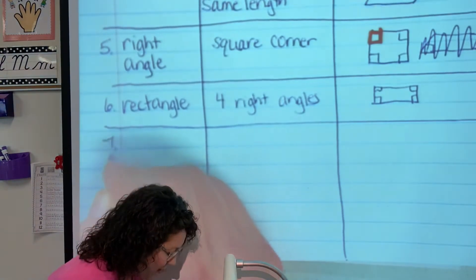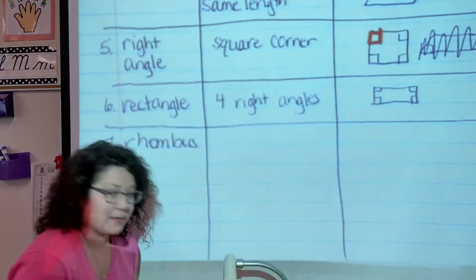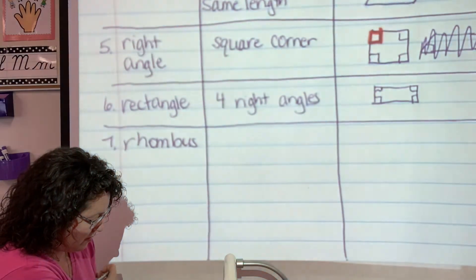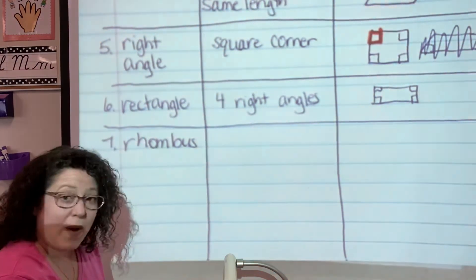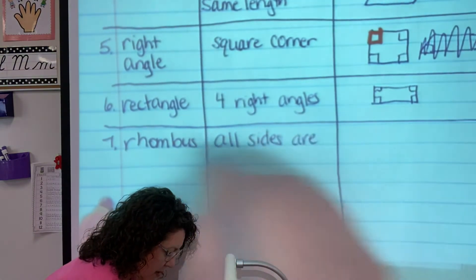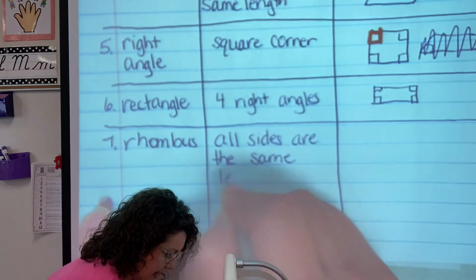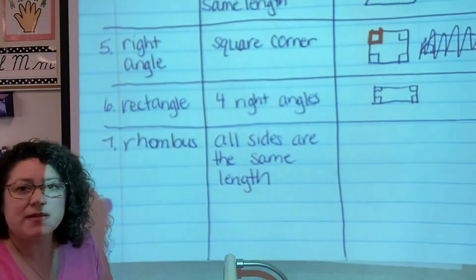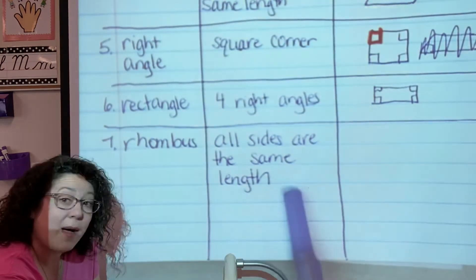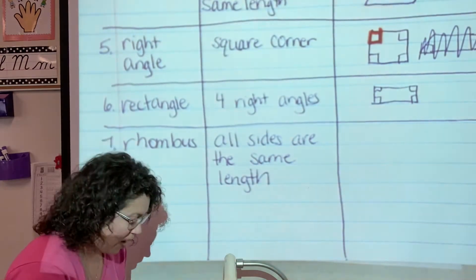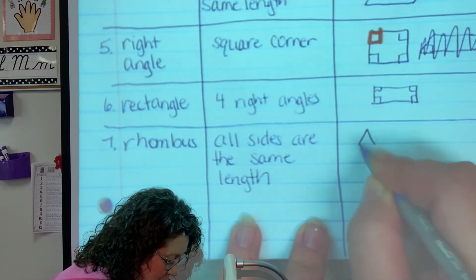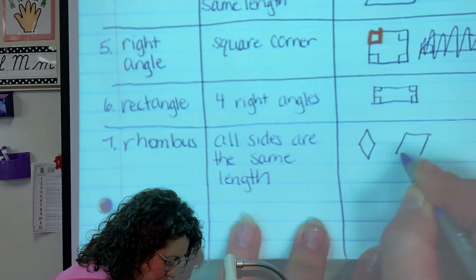Okay, number seven. Rhombus. Rhombus, R-H-O-M-B-U-S. Rhombus. And a rhombus has all sides are the same length. So is a rectangle a rhombus? Not this one, because this one all sides are not the same length. A rhombus all sides, all four sides, because it's a quadrilateral, all four sides are the same length. A lot of people like to call or draw a rhombus like a diamond. Okay, or a kite.